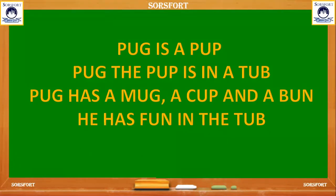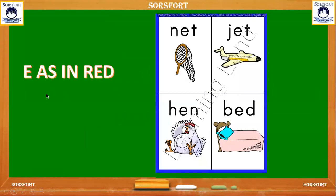Now let's see the next letter: E. E as in red. Where is E in the red? E is in between R and D. R, E, D — red. N, E, T — net. J, E, T — jet. H, E, N — hen. B, E, D — bed. Like this, you can start reading the three-letter words.